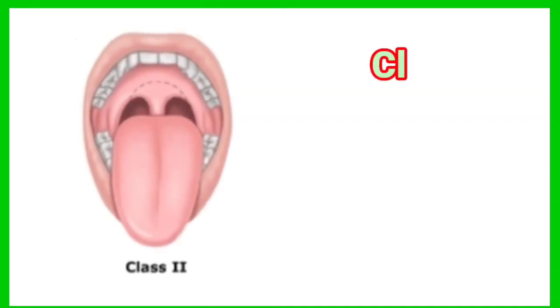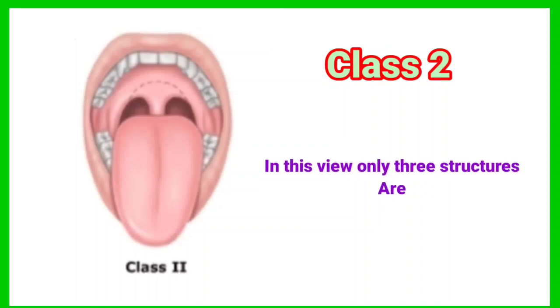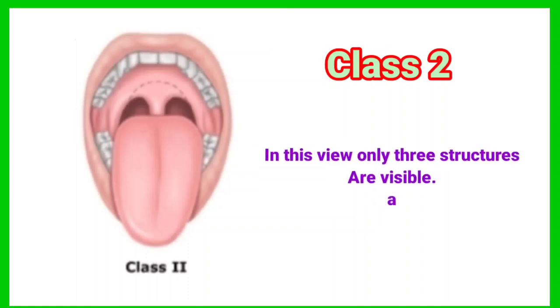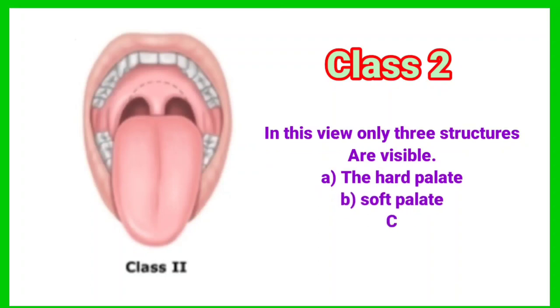This is Class 2 of Malampati classification. In this view, only three structures are visible: the hard palate, soft palate, and uvula. In this view, only the pillars are not visible.